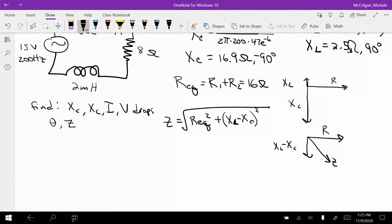So square root. So I'm going to get Z is equal to the square root of 16 squared plus (16.9 minus 2.5) squared. So XL minus XC is equal to 14.4 ohms in the negative 90 degree direction. So I'm just taking the magnitude, 14.4 squared, square root. So Z is equal to 21.5.